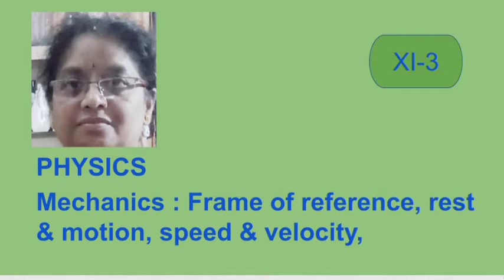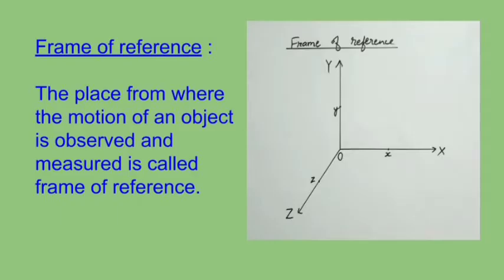For example, as everyone might have experienced, a passenger sitting in a train is at rest with respect to the moving train, but it is in motion with respect to the platform. So here we are talking about the reference. In the example, we have observed the motion of the passenger from two references — one is the moving train and the other is the platform. With this, the concept of frame of reference becomes clear. The place from where the motion of an object is observed and measured is called frame of reference. We usually follow the Cartesian system of coordinates as frame of reference, in which we consider three coordinates x, y and z along x-axis, y-axis and z-axis.